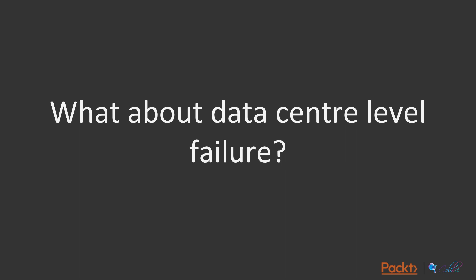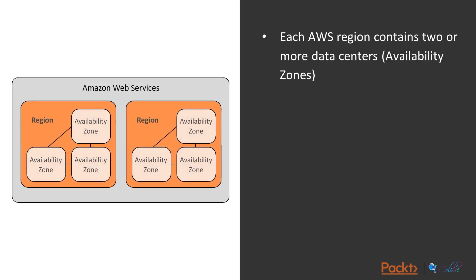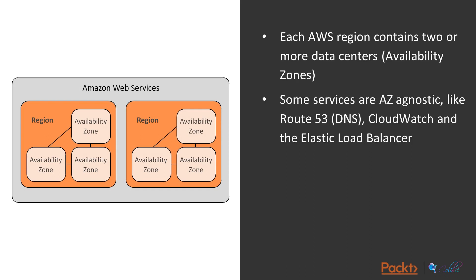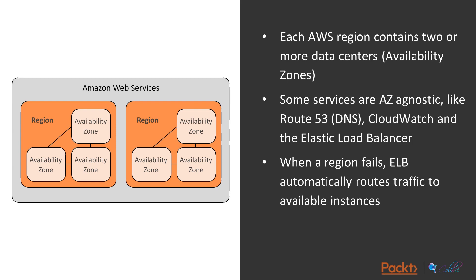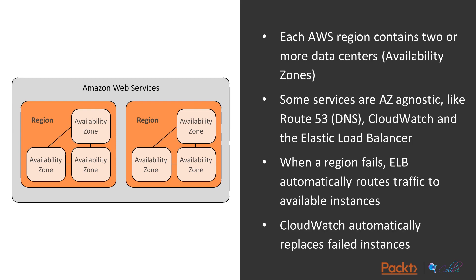What about a data center failure? Each AWS region contains two or more data centers or availability zones, and some services are AZ-agnostic — services like Route 53 for DNS, CloudWatch, and the Elastic Load Balancer. When an AZ fails, ELB will automatically start routing traffic to available instances, and CloudWatch will know those instances have failed and automatically replace them with new ones in one of the remaining availability zones. All availability zones within a region are connected together directly.